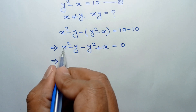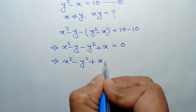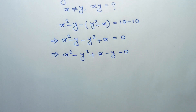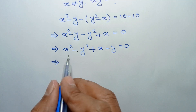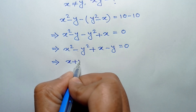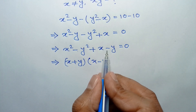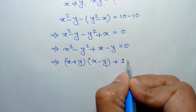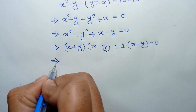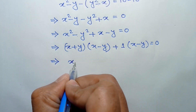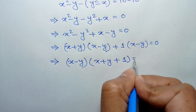Rearranging, we can write x squared minus y squared plus x minus y is equal to 0. Applying the formula a squared minus b squared equals a plus b times a minus b, we can write x plus y times x minus y, and taking common positive 1 from the remaining two terms, we get plus 1 times x minus y equals 0. Taking x minus y as common: x minus y times x plus y plus 1 equals 0.